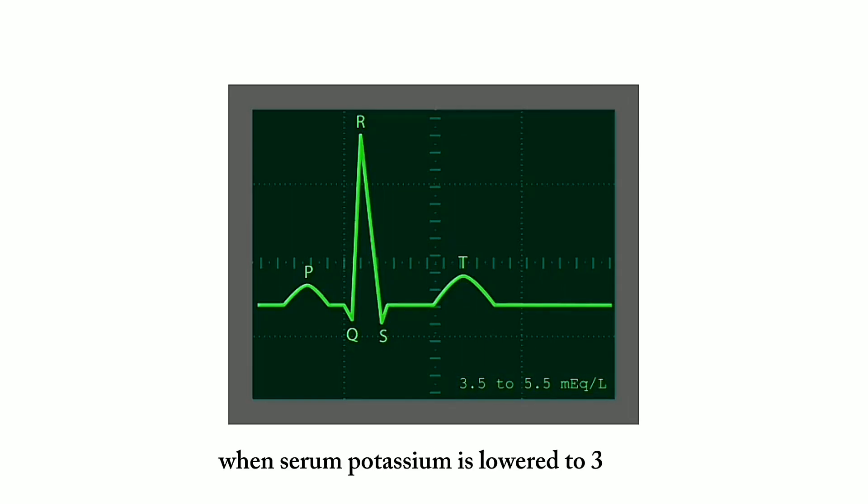When serum potassium is lower to 3 milliequivalents per liter, we see a slight T wave depression and the appearance of the U wave.